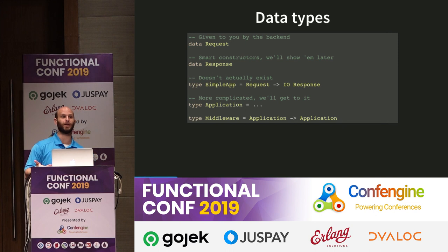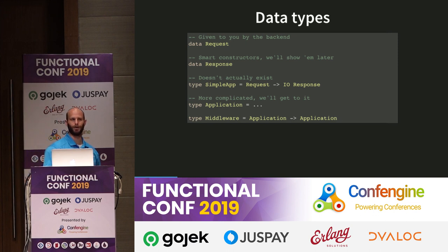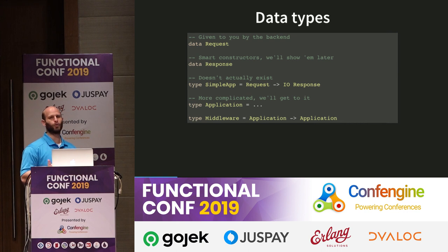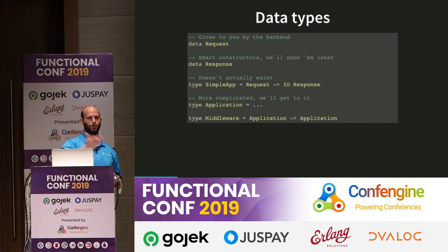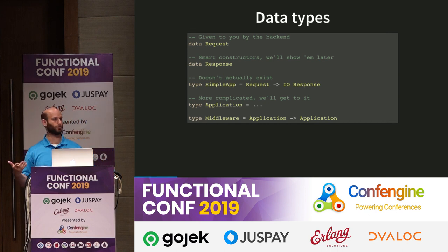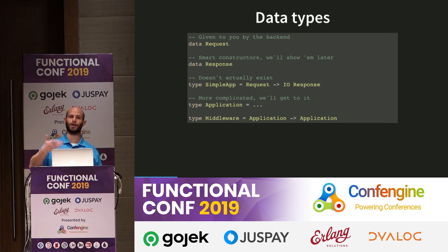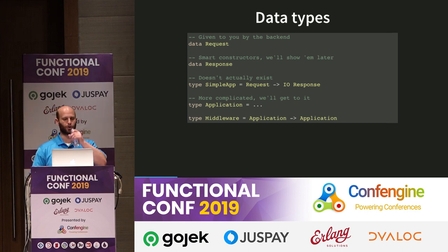So therefore we do have this Application type, which I'm going to get to. A middleware is really cool — it's something that just transforms an application. It takes the original application and does something with it. So a logging middleware transforms an application into an application that also does logging. We'll see how to write and use some of these later.